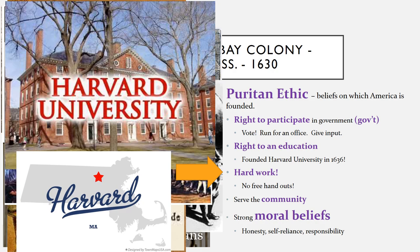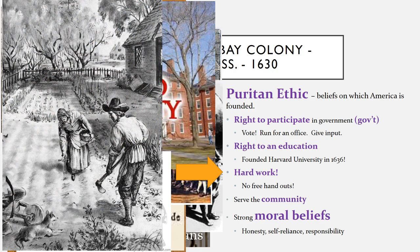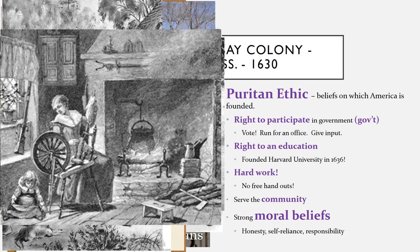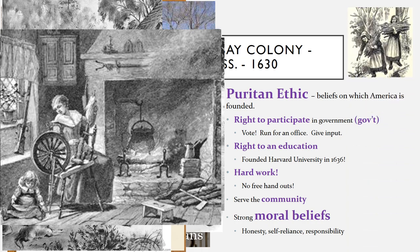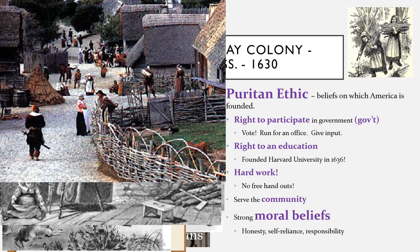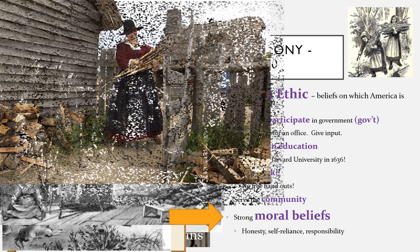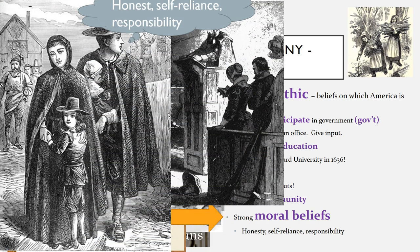Another vital part of the Puritan ethic that America is founded on is the idea of hard work. This went for men and women — they believed that everyone needed to contribute to the community, and working hard was something that pleased God and made you a valuable member of society. Puritans did not believe in giving free handouts; they believed in getting what you earned through hard work and effort. The Puritans also had strong moral values like honesty, self-reliance, and responsibility that are still part of our American culture today.